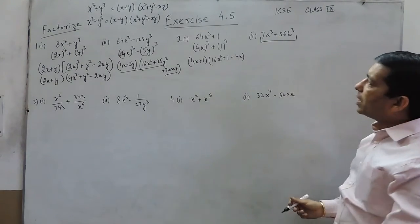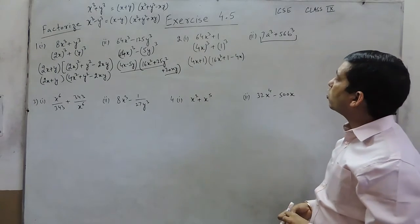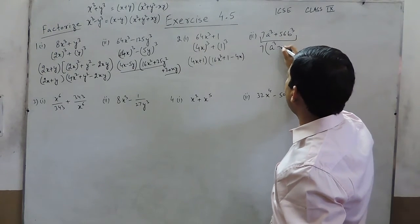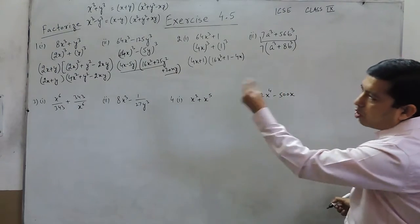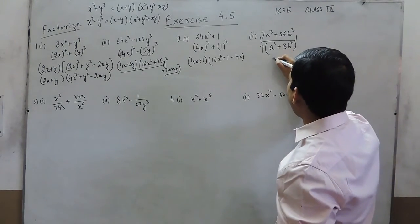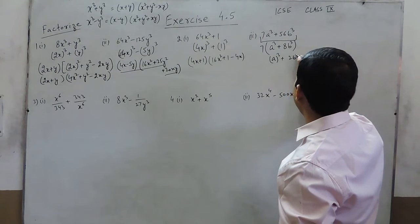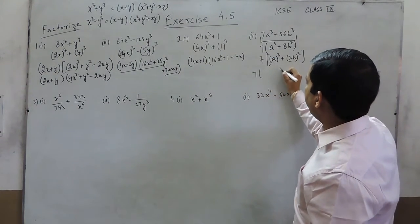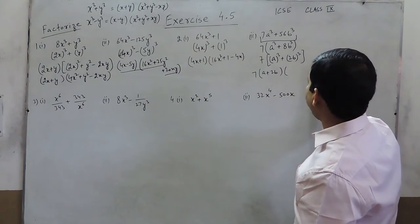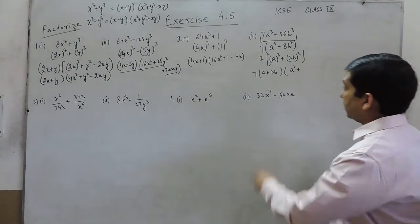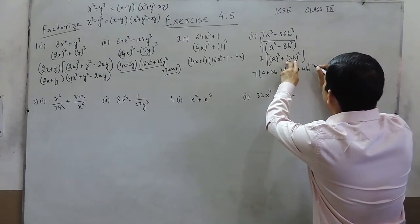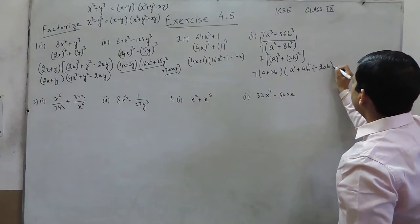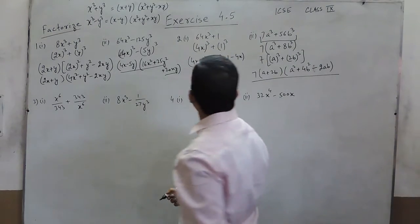In the next question, 7a³ is not a perfect cube and 56b³ is also not a perfect cube, so we take something common. If we take 7 common, it becomes 7(a³ + 8b³), which can be written as 7 times (a)³ plus (2b)³. Applying the identity, the first factor is (a + 2b) and the second factor is (a² + 4b² − 2ab). So these are the factors of 7a³ + 56b³.